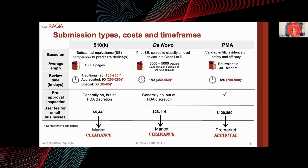Generally, 510ks and de novos don't require an inspection before you can market your products, whereas PMAs require a pre-approval inspection. By comparison, anything besides self-certified products in the EU requires a notified body review for both your quality management system and your submission technical file content.